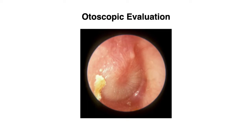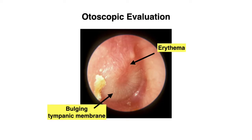Now aside from symptoms, what do we see when we use the otoscope? In this photo here, we're actually looking at the eardrum of a patient with acute otitis media. One of the findings here is erythema, which you can see in the photo, but just keep in mind that erythema is not diagnostic of acute otitis media. This is because erythema is a very nonspecific finding — it can be present in patients that have a cough or even a fever, so it's not by itself diagnostic of an ear infection.